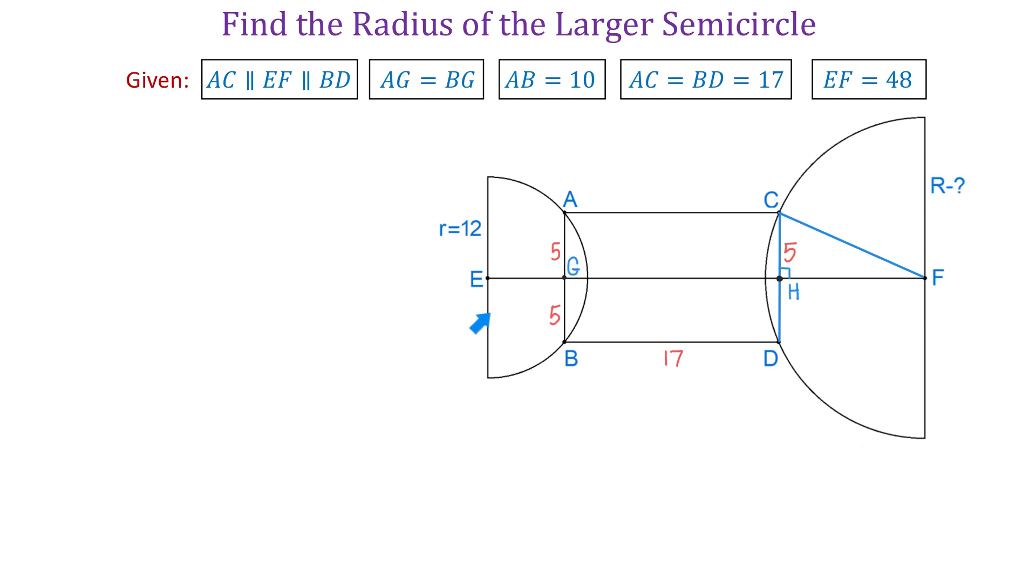To solve this problem, we will start with the semicircle to the left. First, we will connect the points A and E and now we have another right triangle, AGE. In this right triangle, one side is 5 units and the hypotenuse is 12 units because this is also the radius of this semicircle.